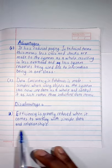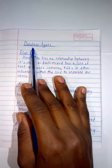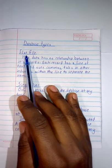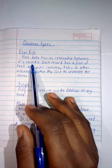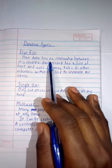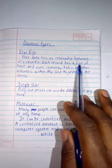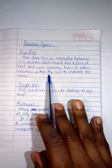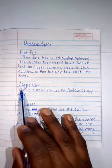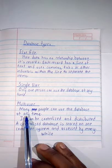Looking at database types, we have flat file. With flat file, data has no relationship between its records. Each record has a line of text and uses commas, tabs, or other indicators within the line to separate the text. Single user means only one person can use the database at any time. Multiple user means many people can use the database at any time.